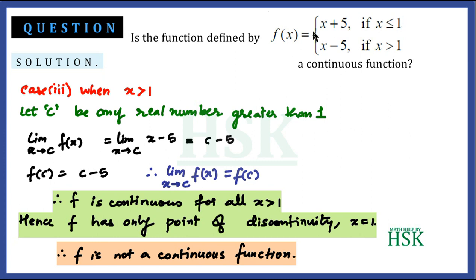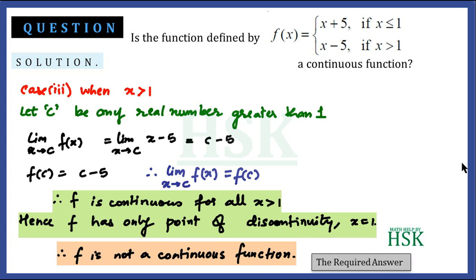f is defined for all real numbers — there is not a single real number for which this function is not defined. However, the function is not continuous at x = 1. Since there is a point in the domain where the function is discontinuous, the function is said to be a discontinuous function. Therefore, this function is not a continuous function.